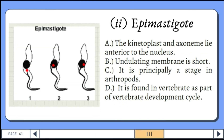Next is the epimastigote. The kinetoplast as well as the axoneme lie anterior to the nucleus. The undulating membrane is short and it is principally a stage in arthropods, but is also found in vertebrates as part of the vertebrate developmental cycle.